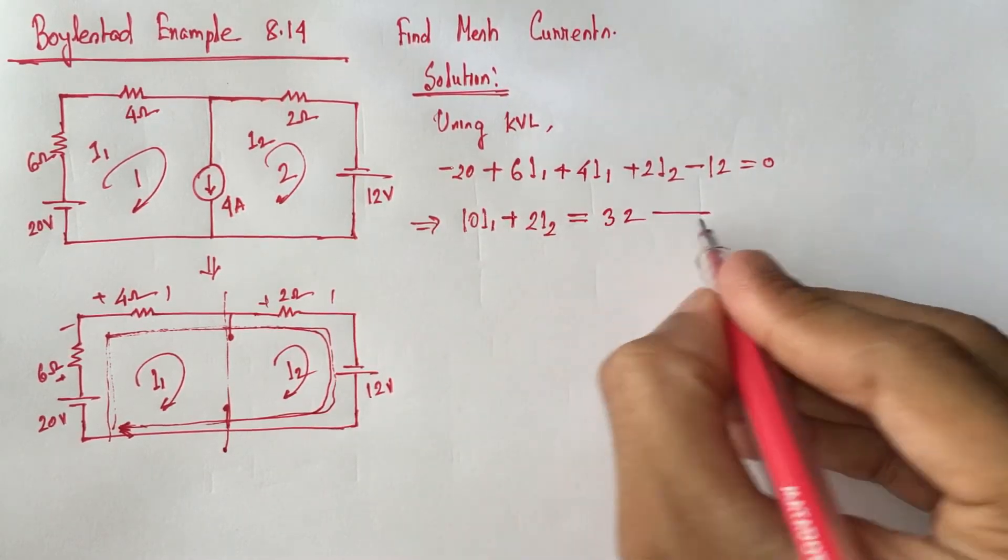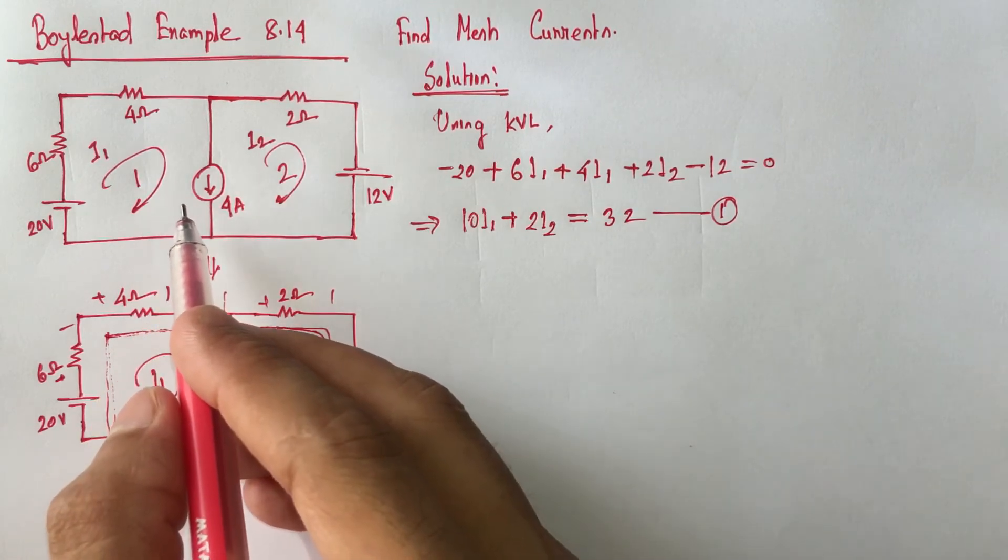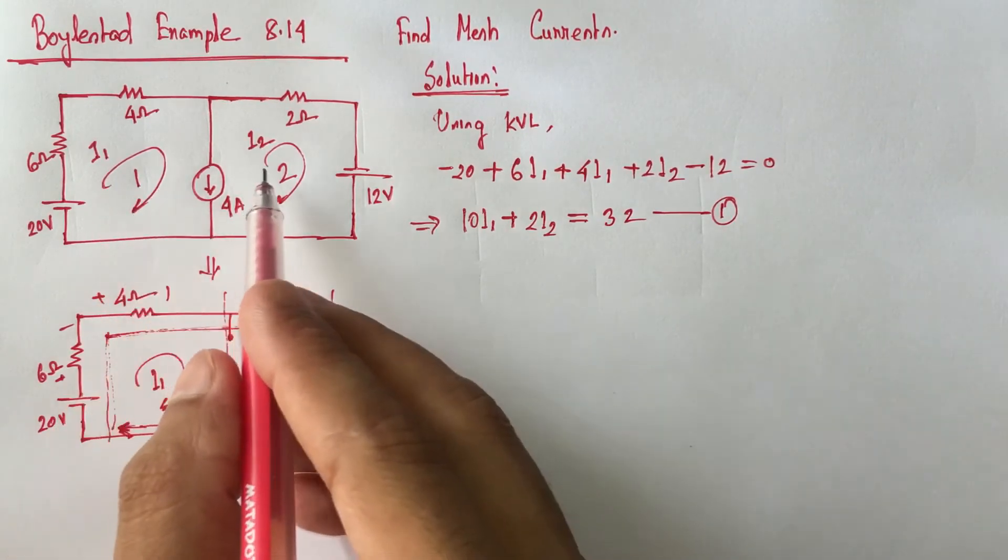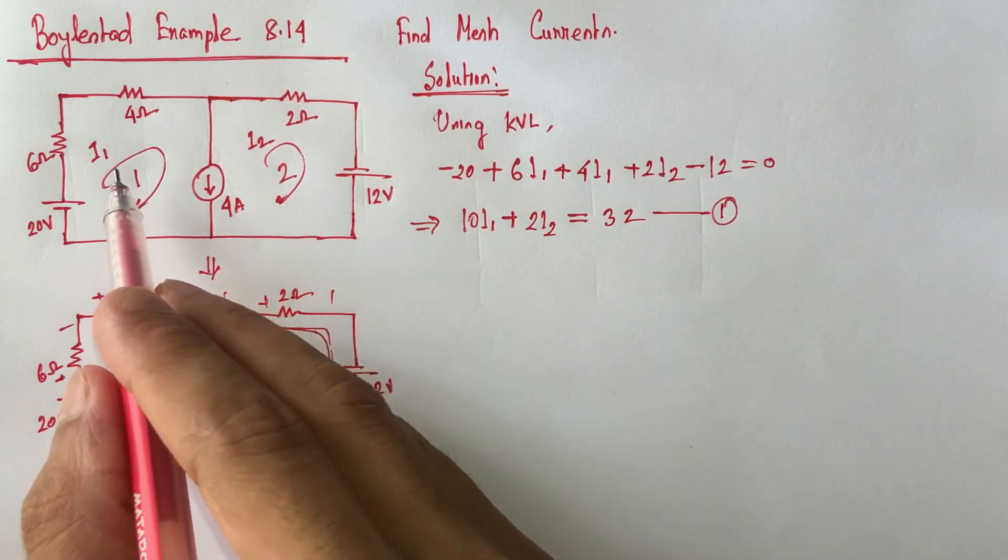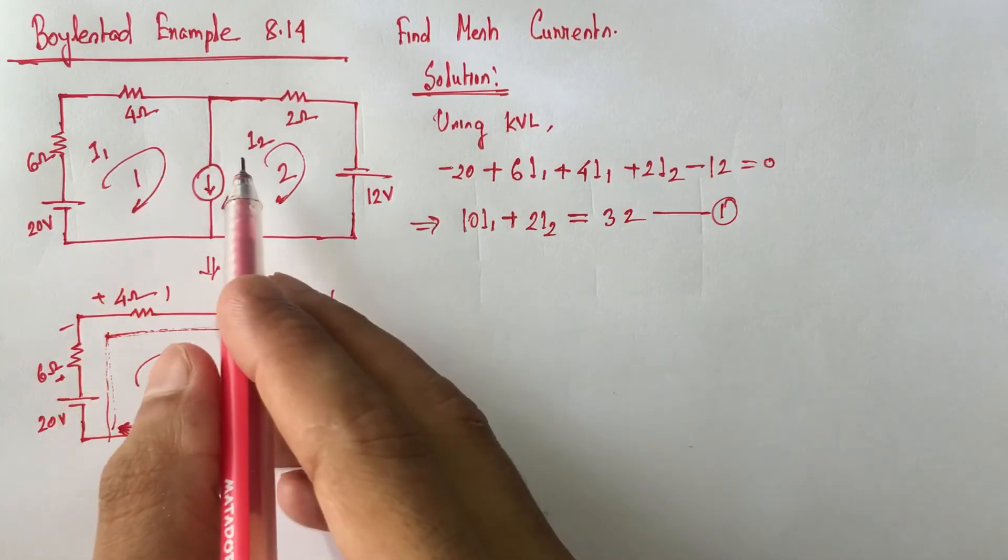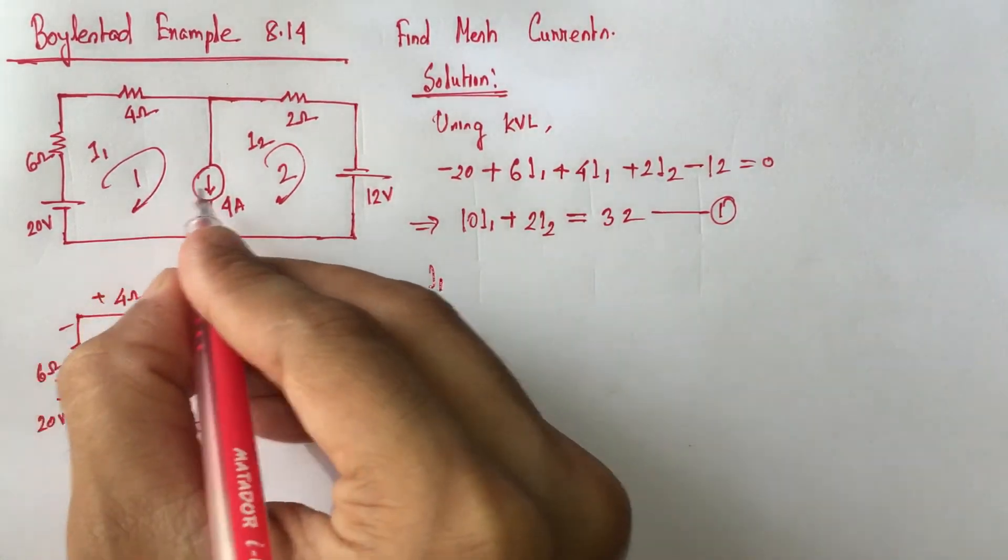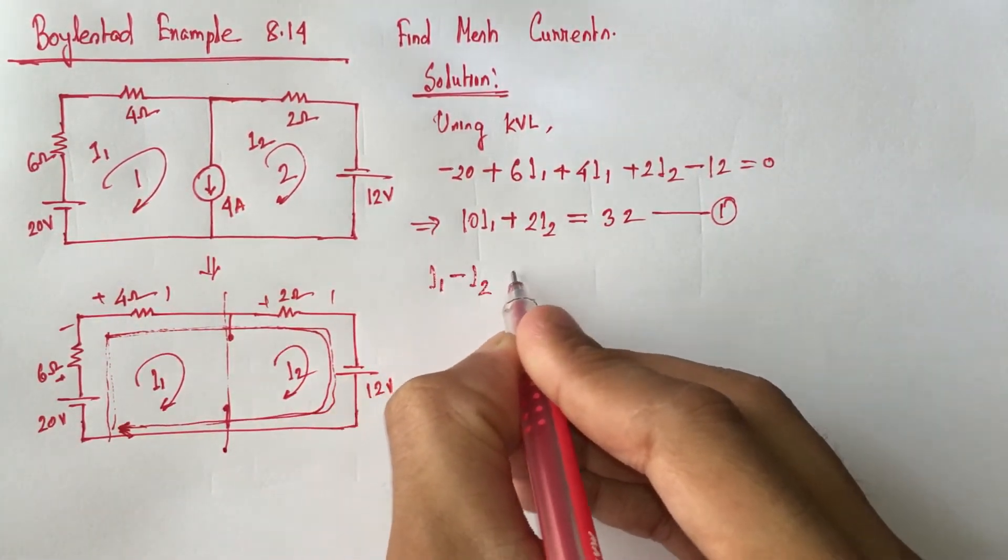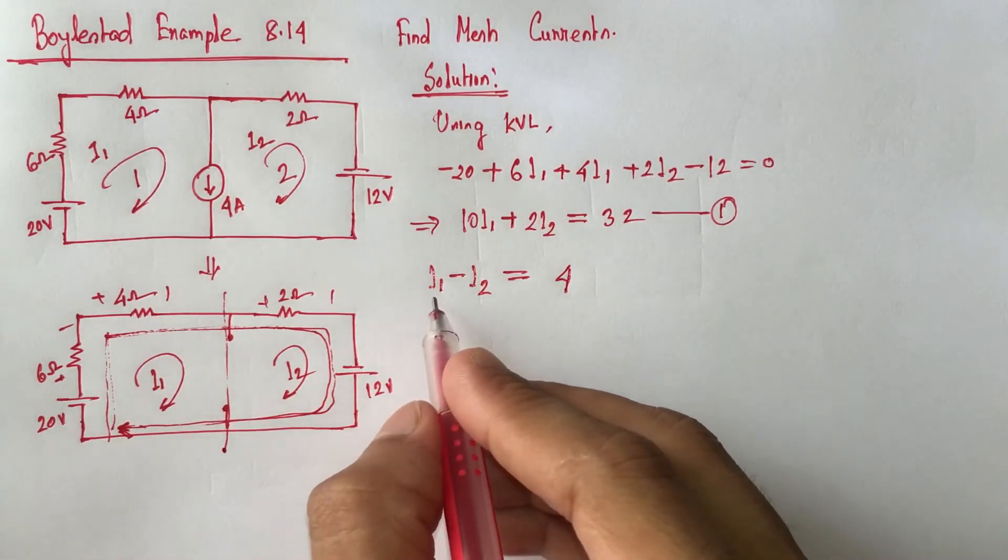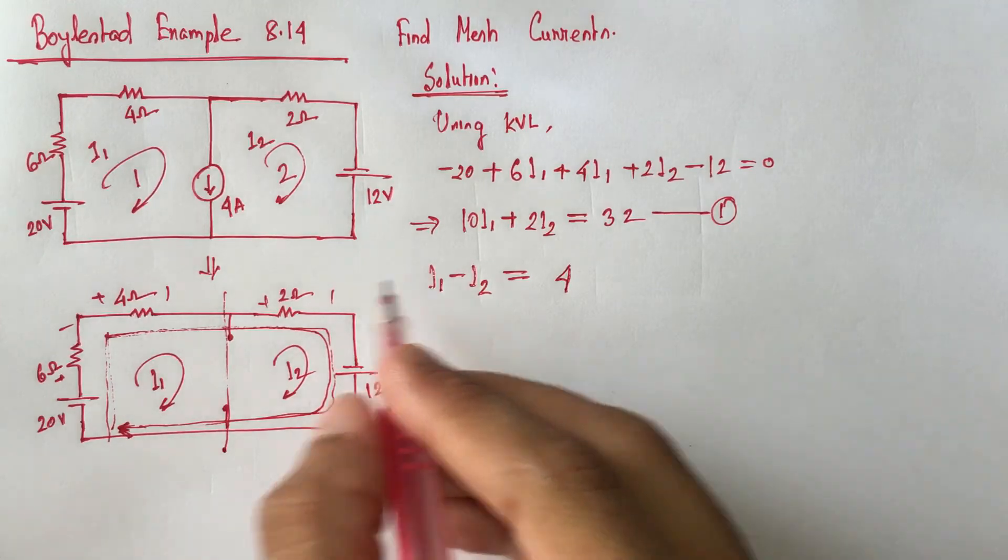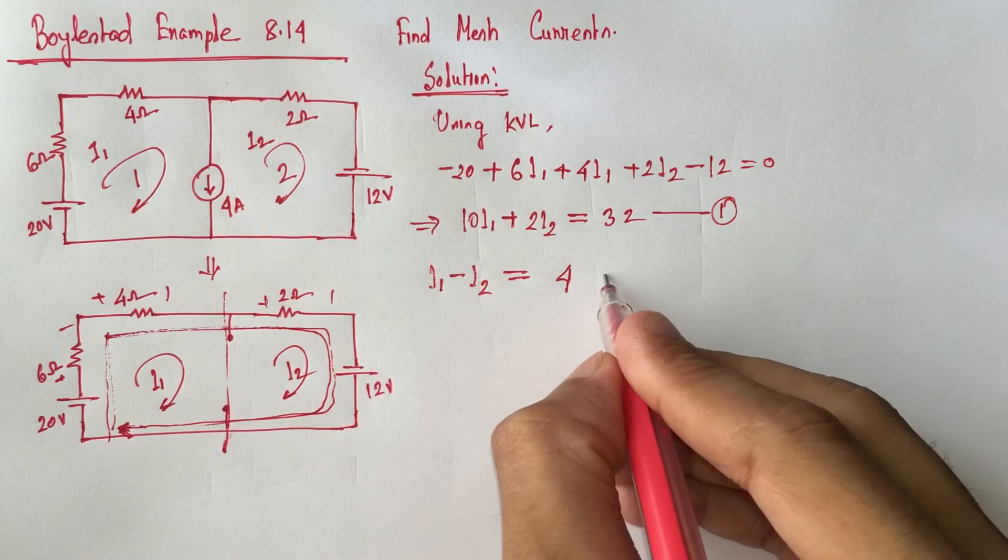From the circuit we see that i1 current is flowing downward and i2 is flowing upward. We can write an equation by subtracting i1 and i2, which will equal 4 ampere. i1 minus i2 equals 4 ampere. This is positive because i1 is going downward, so 4 ampere is also going downward. This is equation 2.